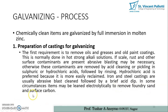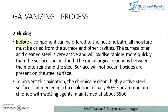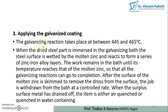The second step is fluxing. Before a component can be offered to the hot zinc bath, all moisture must be dried from the surface and cavities. The surface of acid-cleaned steel is very active and will oxidize rapidly — more quickly than the surface can be dried. The metallurgical reaction between molten zinc and the steel surface will not occur if oxides are present. To prevent this oxidation, the chemically clean active steel surface is immersed in a flux solution, usually 30% zinc ammonium chloride with wetting agents, maintained at about 65°C.